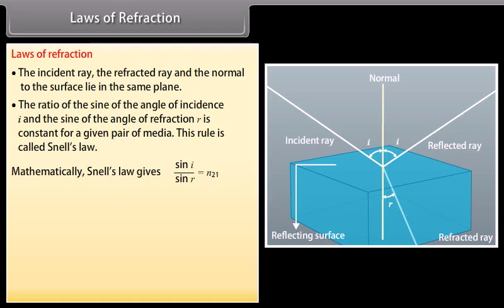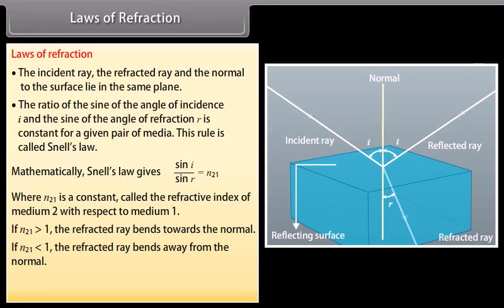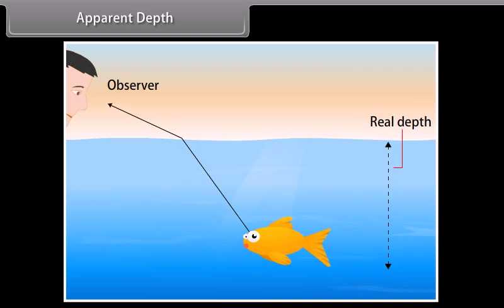Mathematically, Snell's Law gives sin i / sin r = N₂₁, where N₂₁ is a constant called the refractive index of medium 2 with respect to medium 1. If N₂₁ > 1, the refracted ray bends towards the normal; if N₂₁ < 1, the refracted ray bends away from the normal. Higher the refractive index of a medium, the more it is optically denser. Due to refraction, an object in another medium, such as in water, appears to be raised — this is apparent depth.